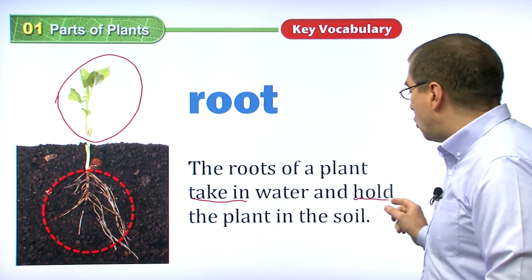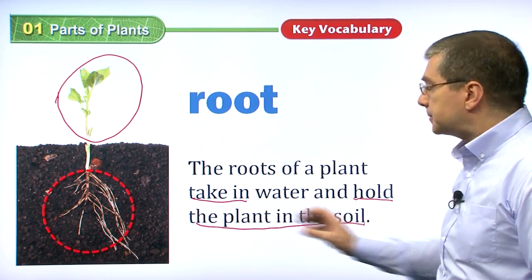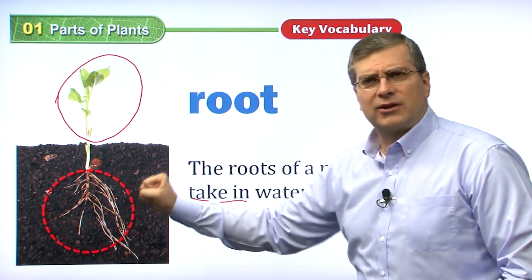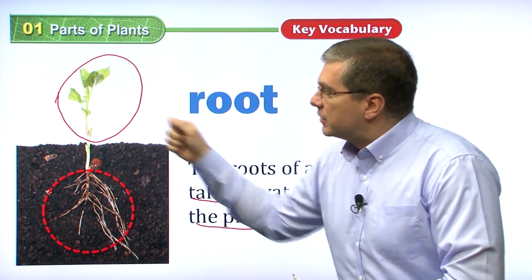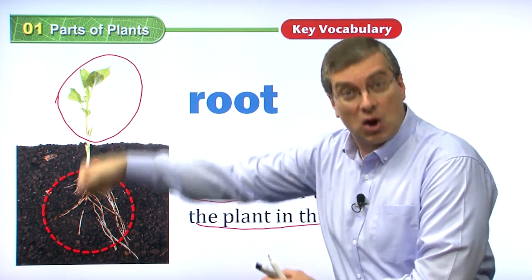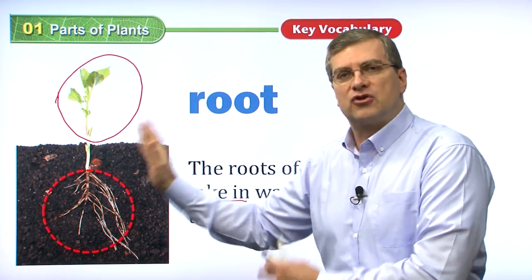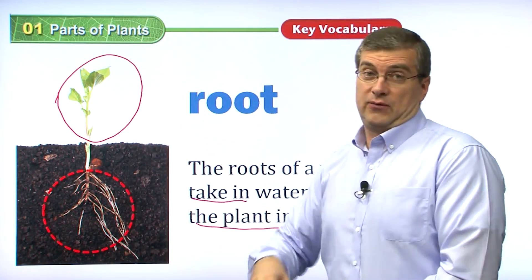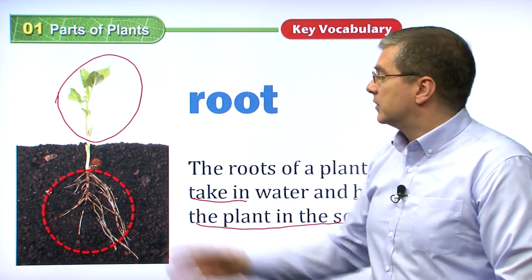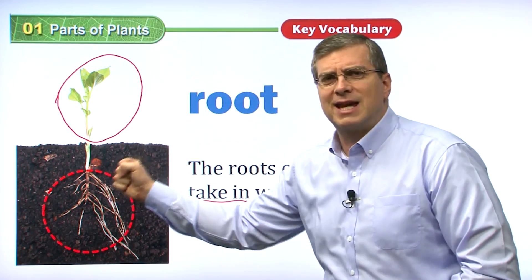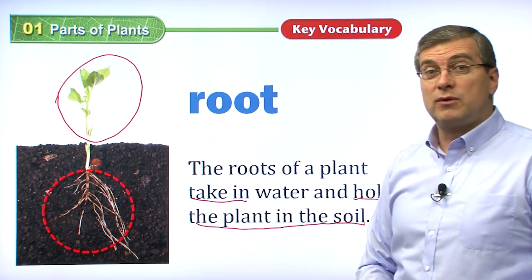The roots also hold the plant in the soil — they are like strong legs in the ground, so the plant does not fall over if there's a strong wind. It stays sturdy and strong. For a tree, which is very heavy, that's very important. Roots help the plant stay strong in the soil.